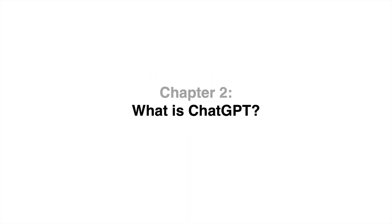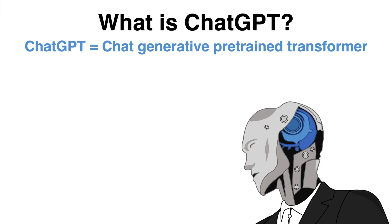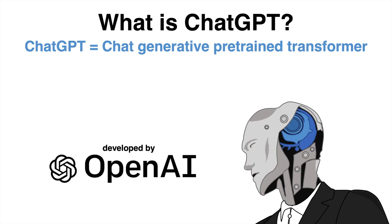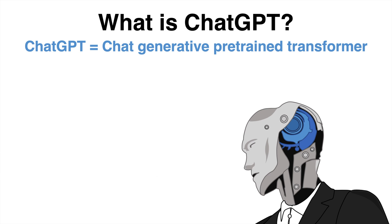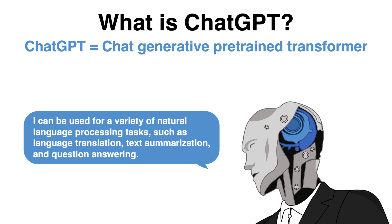What is ChatGPT? ChatGPT is a large language model developed by OpenAI that is able to generate human-like text based on a given prompt. The abbreviation GPT stands for Generative Pre-trained Transformer. ChatGPT has been trained on a massive dataset of text from the internet, allowing it to understand and respond to a wide range of natural language inputs. It can be used for tasks such as language translation, text summarization, and question answering.